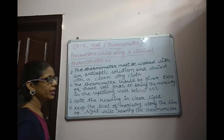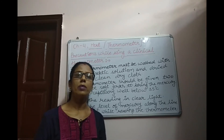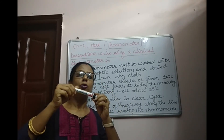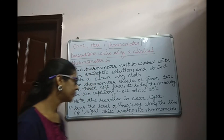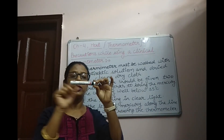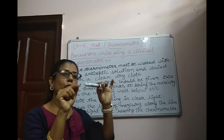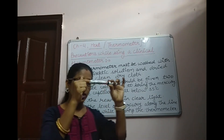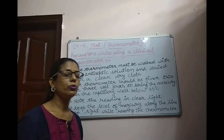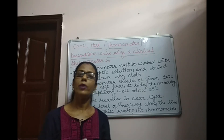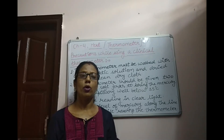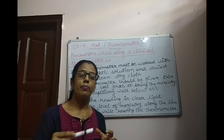Always note the reading in clear light, and give the thermometer a small rotation to make the mercury level clearly visible. Keep the mercury level along the line of sight while reading. Also, do not use the Clinical Thermometer for measuring the temperature of other objects, and do not keep it in the sun or near a flame, as it may break.